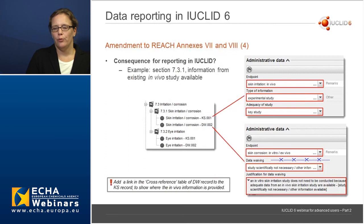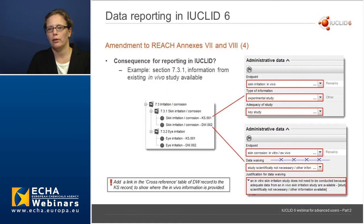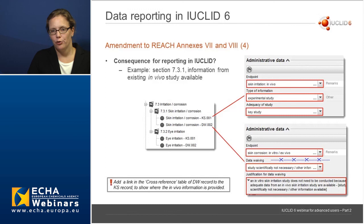It's also useful to keep in mind that when doing this kind of data waiving based on available information in the dataset, it's useful to use the cross-reference table in the administrative data part to create a link from the data waiving record to the record on which the data waiving is based. So in this case, the data waiving record for the in vitro would have a cross-reference to the in vivo endpoint study record, to make it clear to the reader where the information used as a basis for waiving is available.